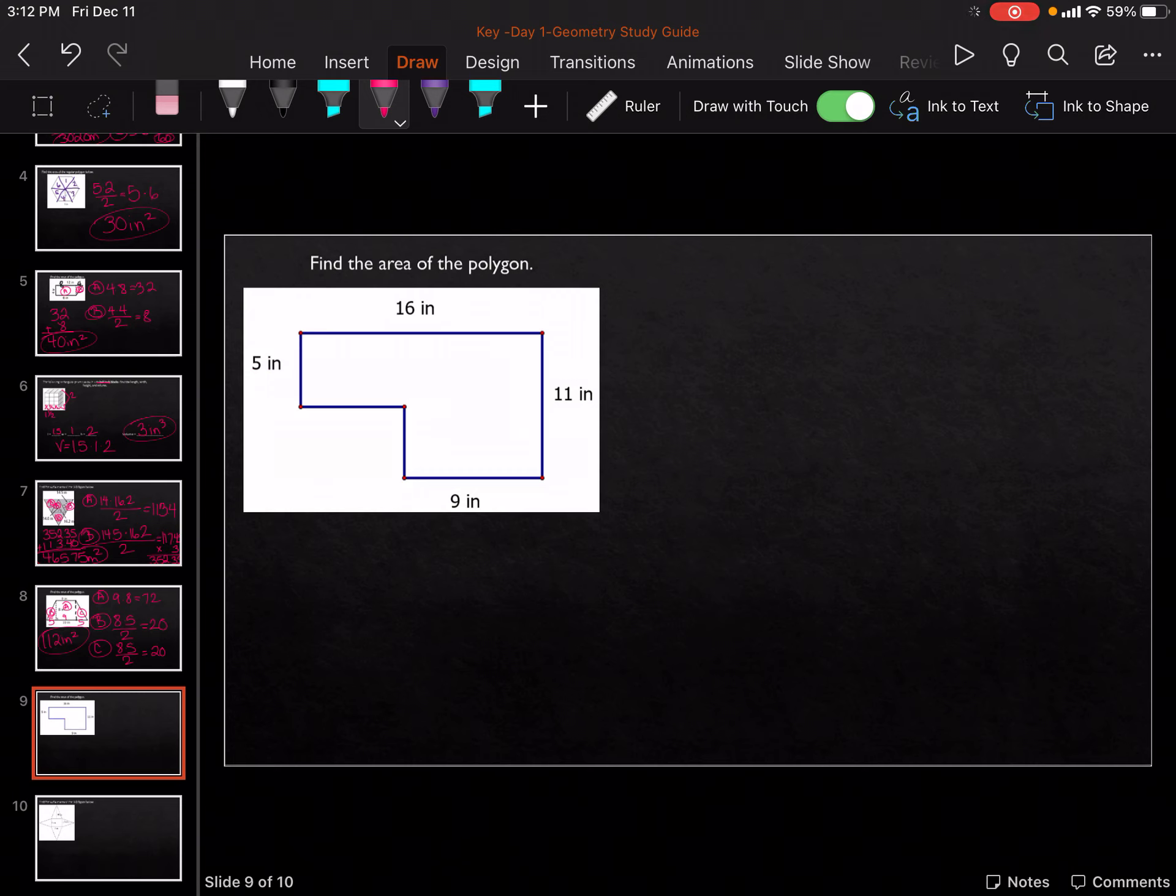Okay? Here we go. Next one. We can cut it off either direction. I'm going to cut it this way. Why not? So we've got A. We've got B. For A, it's going to be 5 times 16, which is 80.